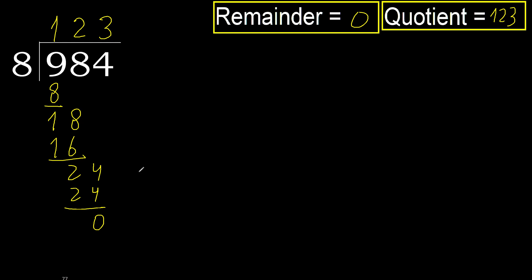Okay. Remainder 0. Therefore, 984 divided by 8 is 123.